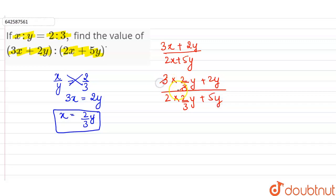Now 3 will be cancelled with 3, so 1 into 2 is 2. So 2y plus 2y in the numerator. In the denominator, it is 4 by 3y plus 5y. This is equal to, in the numerator, 2 plus 2, which is 4y.